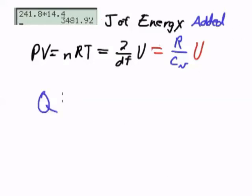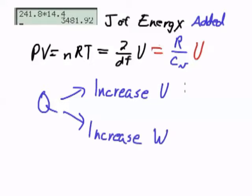In general, the two places that internal energy can go is to either increase U, the internal energy, or it can increase W, the P delta V. You can increase the internal energy or you can do work.